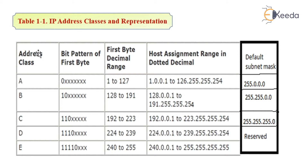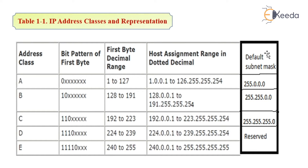Here in the table you can see the list of the address classes and their ranges. Address class A has the first byte decimal range from 1 to 127. The first address in class A is 1.0.0.1, while the default subnet mask is 255.0.0.0.